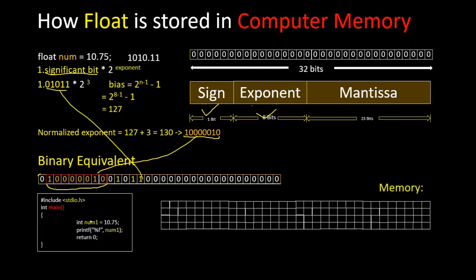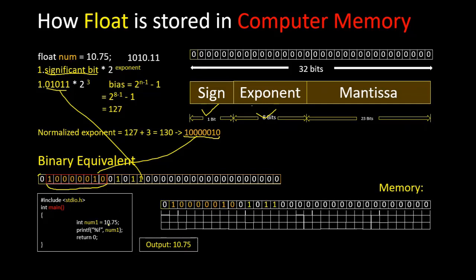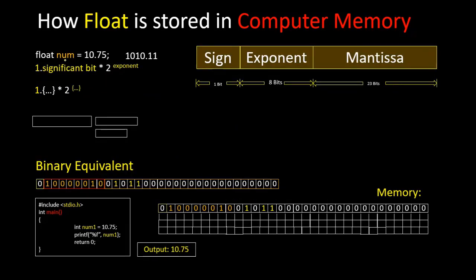If we have this program and this computer memory, the number will be stored in memory like this and it will print 10.75. Now let's talk about how it prints 10.75, because we have this stored binary format. We have this variable and this binary number, and we have to convert this number back.